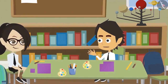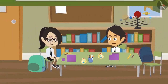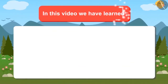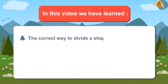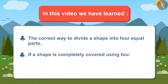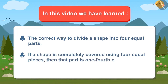Now I have understood properly. Today we have learned the correct way to divide a shape into four equal parts. And if a shape is completely covered using four equal pieces, then that part is one fourth of that whole figure.